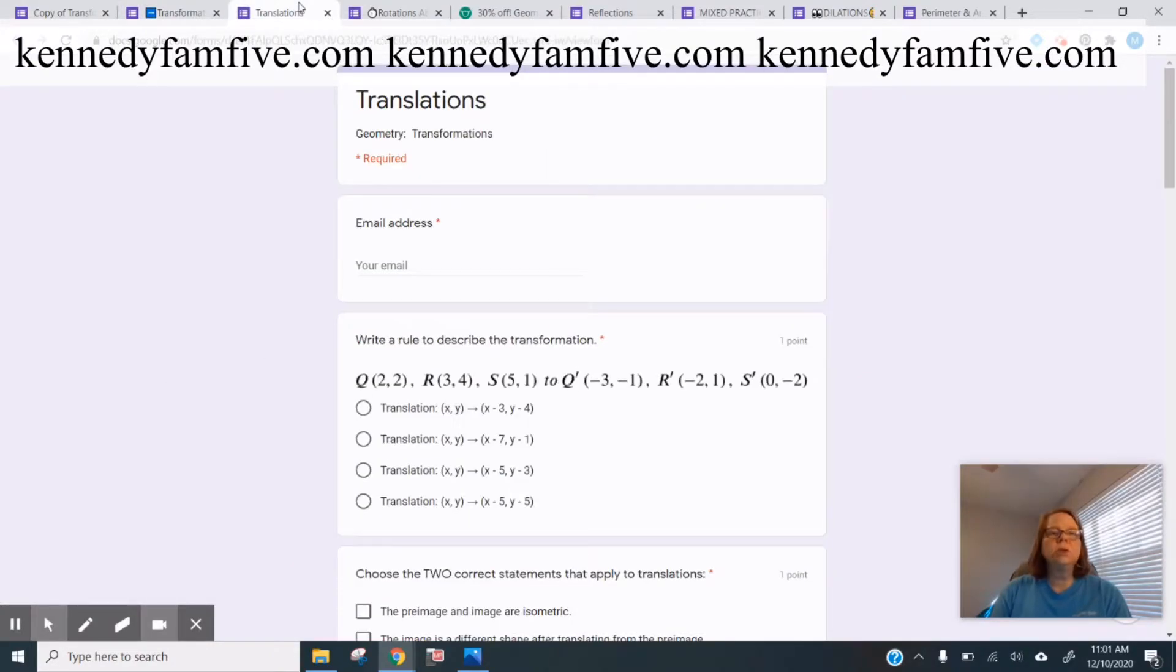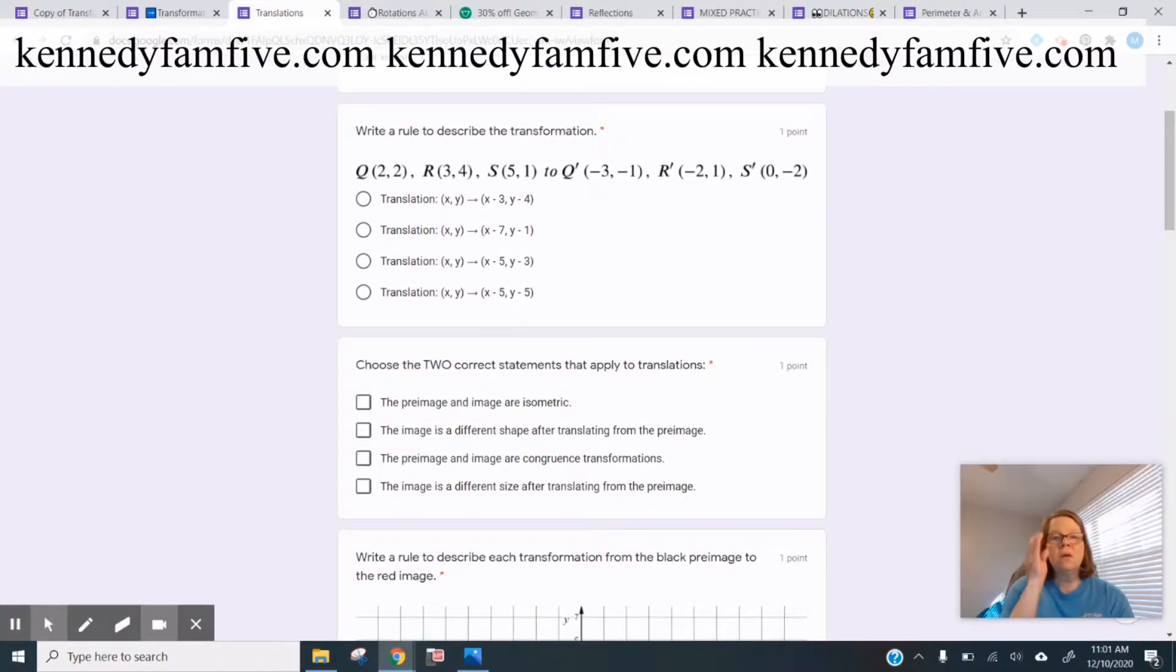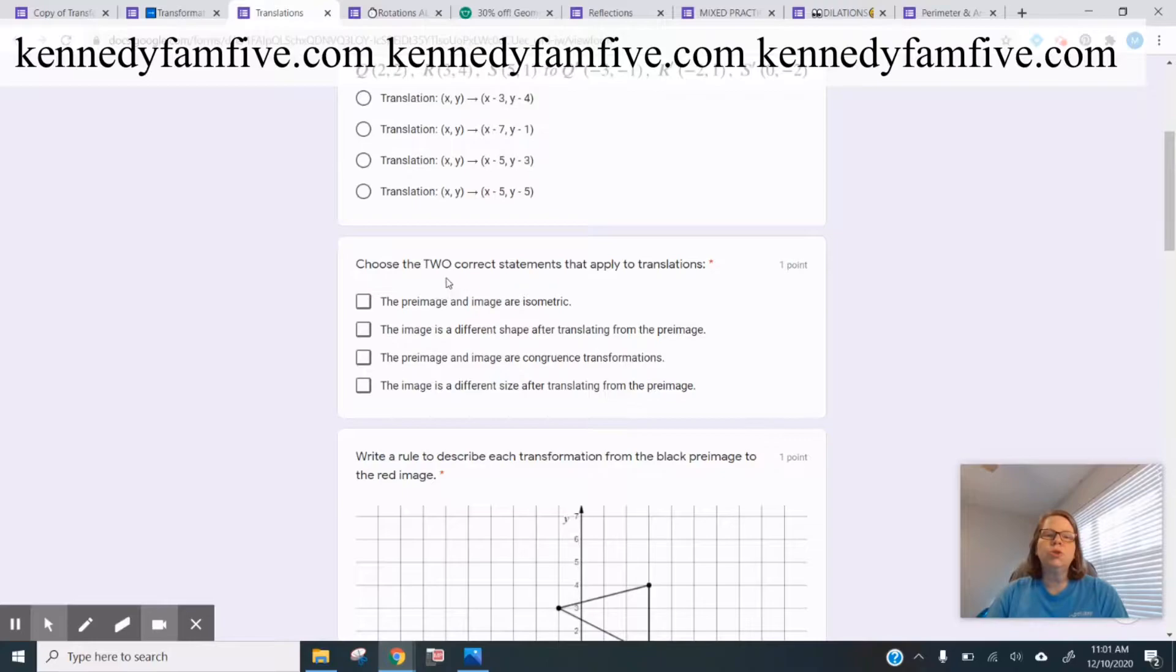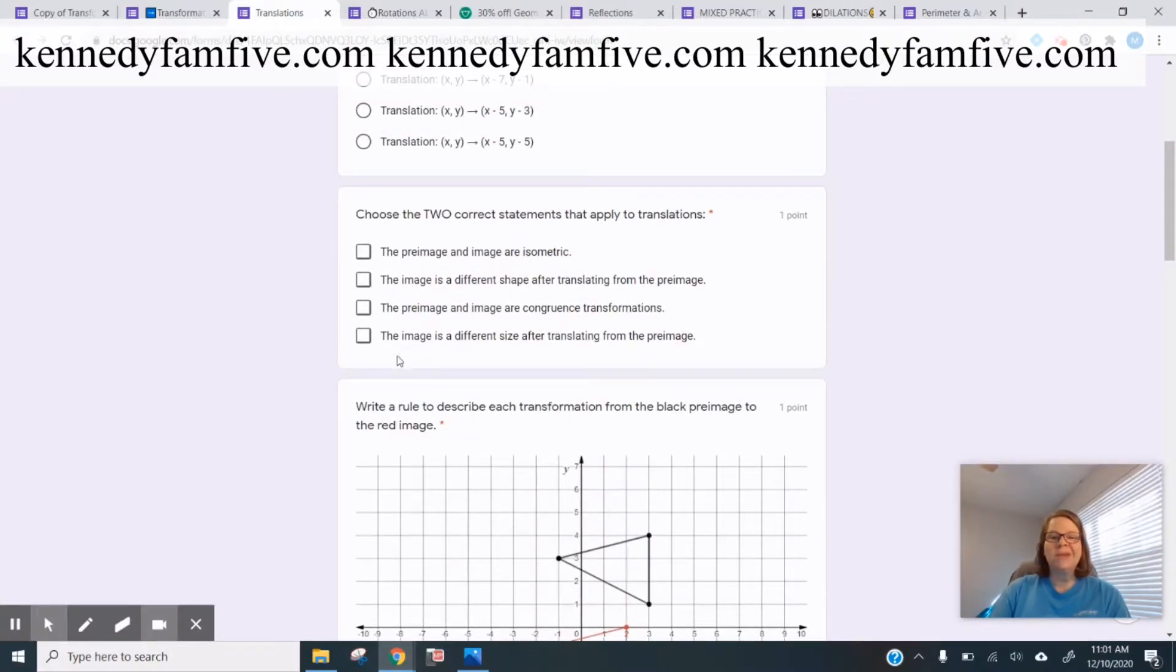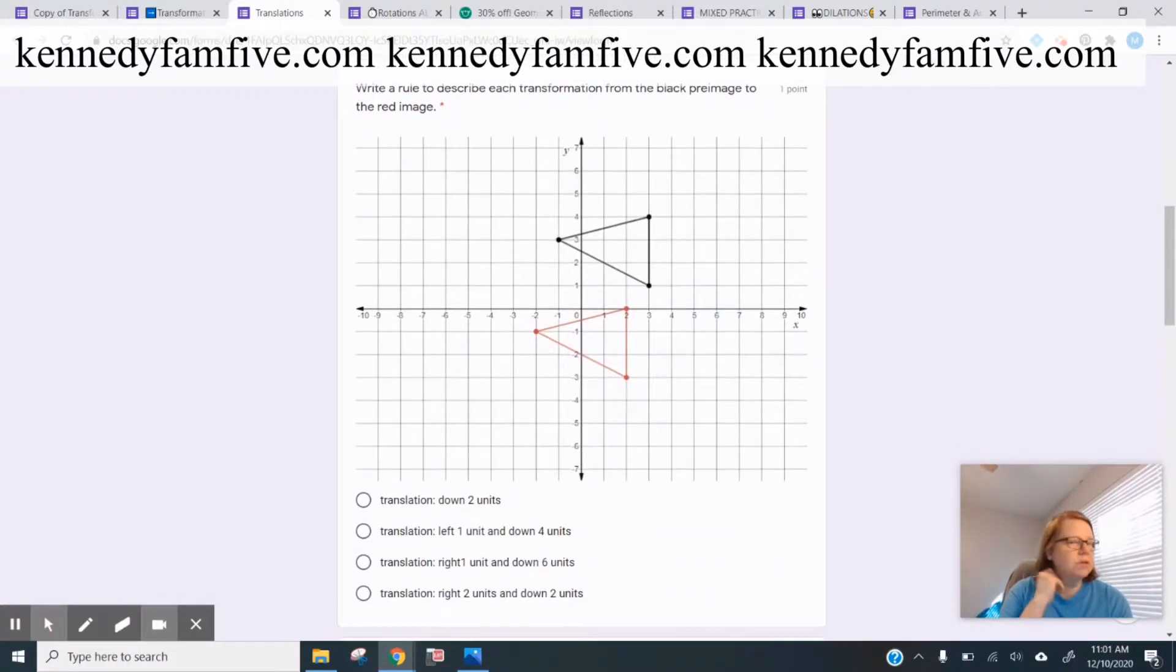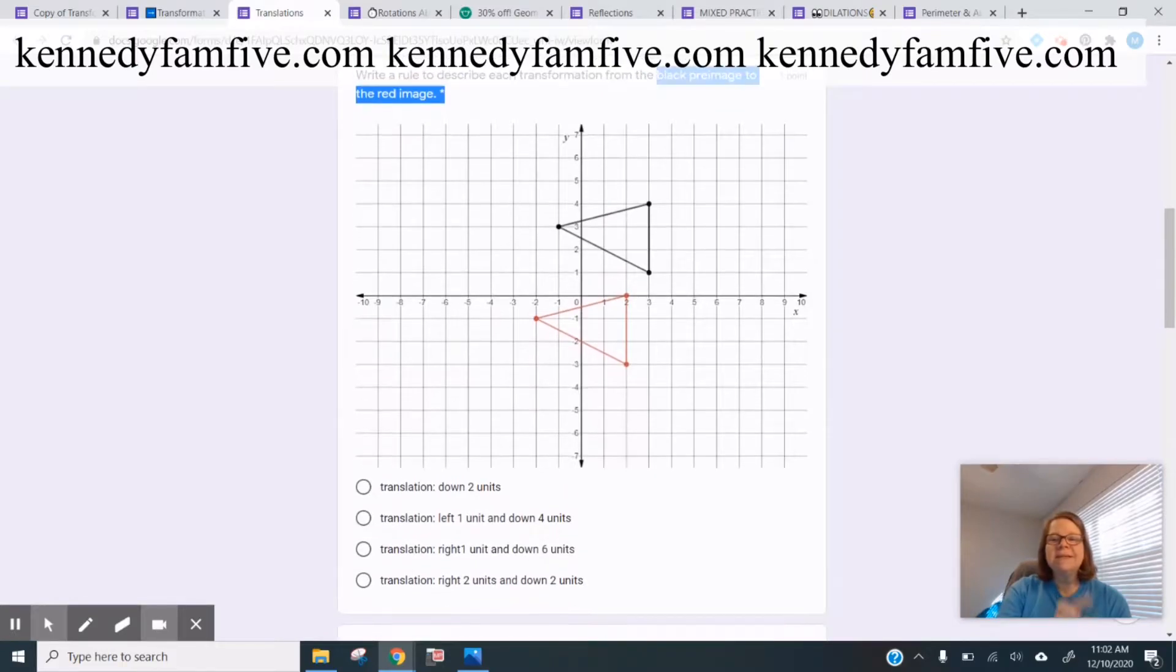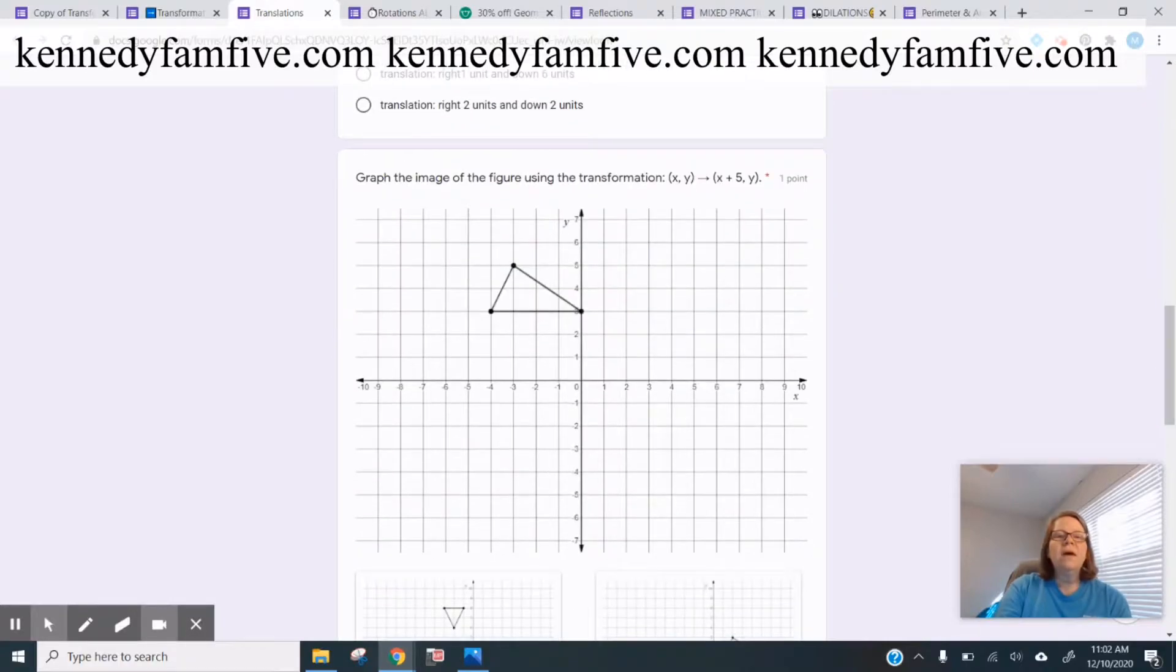And let's look at translations. So here are writing rule. Choose two correct statements. They need to know the word isometric. And because it's just typed in there, if you buy mine, you can rewrite it and use your own wording that your kids are used to or that you're using from your standards. Black and red image here. I was real specific in trying to say pre-image to image because lots of times kids do the opposite, and so they're going to go up instead of down or whatever.